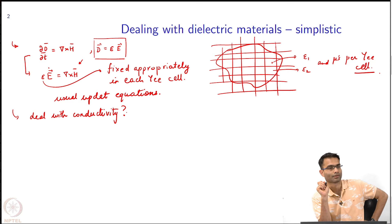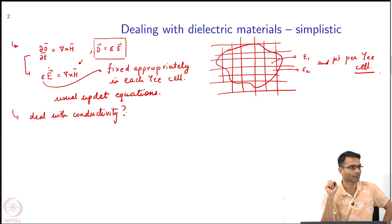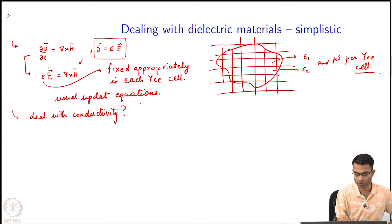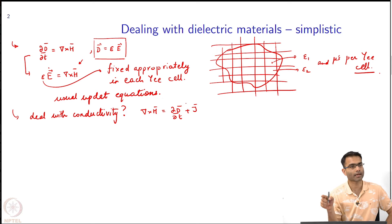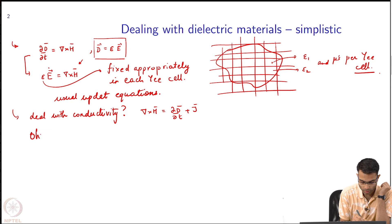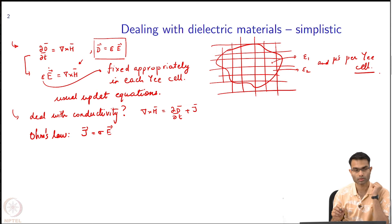There is a j term. First of all, this Maxwell's equation, is it complete or there is something missing in it? The j term is missing. What actually is there is that curl of H is equal to d D by d t plus j. And j I can replace by what law? Ohm's law. Ohm's law, right.